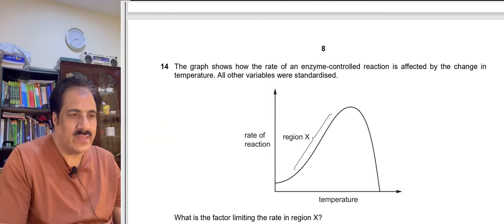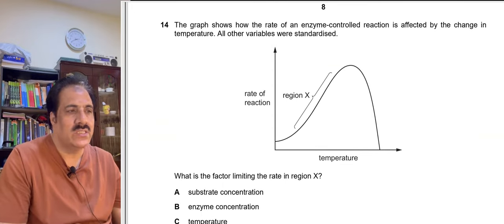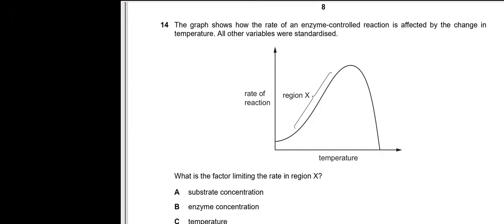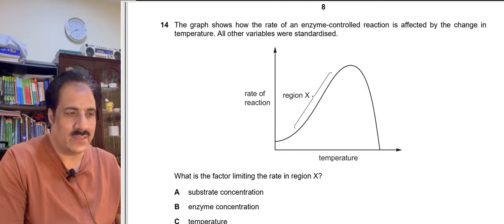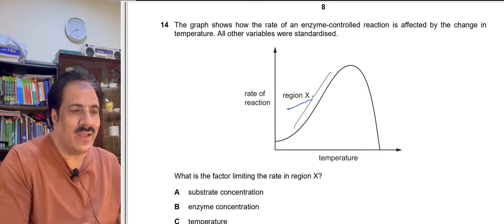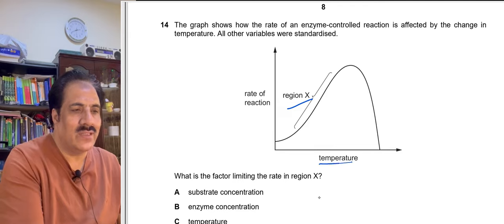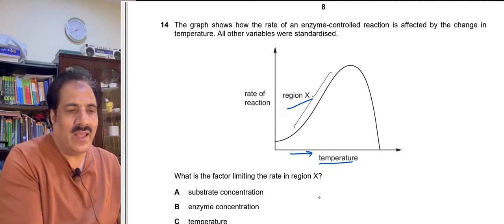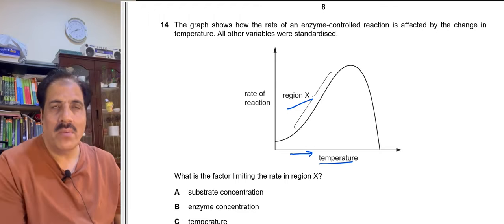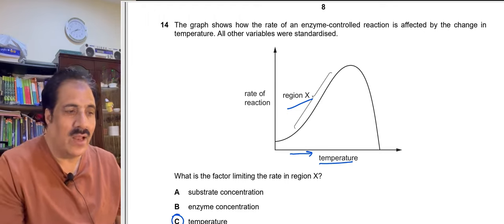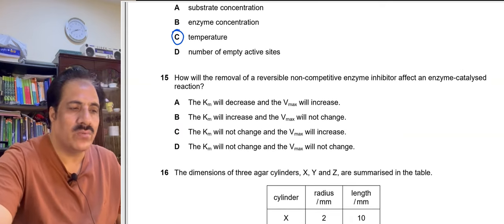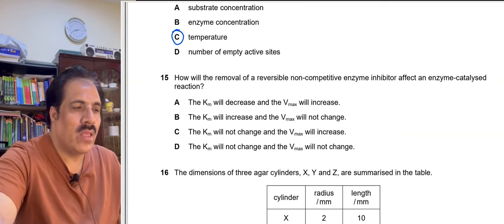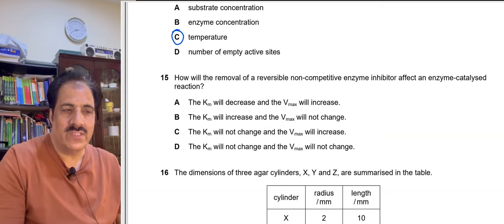Question 14: A graph shows how the rate of an enzyme-controlled reaction is affected by temperature. In region X, as temperature increases the rate of reaction increases, meaning temperature is the limiting factor in that region. Option C is the correct answer.